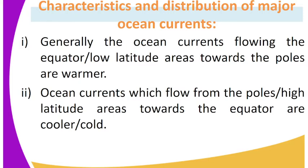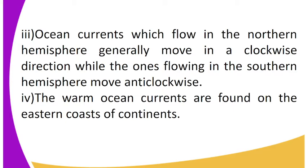The characteristics and distribution of major ocean currents include: one, generally the ocean currents flowing from the equator or low latitude areas towards the poles are warmer. Two, ocean currents which flow from the poles or high latitude areas towards the equator are cooler. Three, ocean currents which flow in the northern hemisphere generally move in a clockwise direction while the ones flowing in the southern hemisphere move anticlockwise.